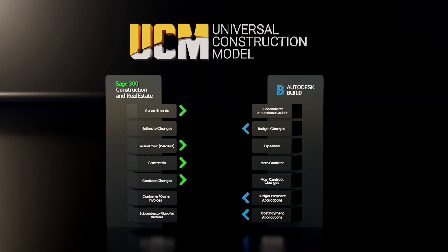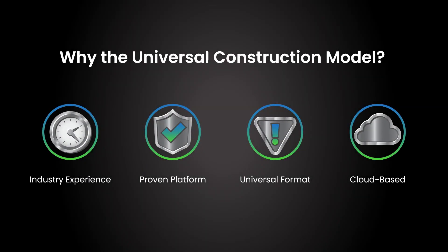HH2 Cloud Services' Universal Construction Model, or UCM, helps these disparate yet essential software solutions to effectively communicate. Our integration platform tears down data silos and allows data to flow between systems while establishing the system of record and managing the direction of synchronized data flow, so Sage CRE and Autodesk Construction Cloud can now work together. The UCM stands out for four reasons: industry experience — HH2 has evolved the UCM to connect siloed systems for almost 18 years; a proven system — thousands of construction companies rely on the UCM; a universal format — the UCM does the heavy lifting accessing Sage's proprietary data structure and bringing it into a more universal structure in the cloud; and a cloud-based solution — the UCM is always on, always available, and auto-updates when new features are released, substantially reducing IT overhead.